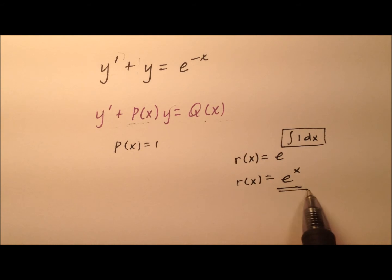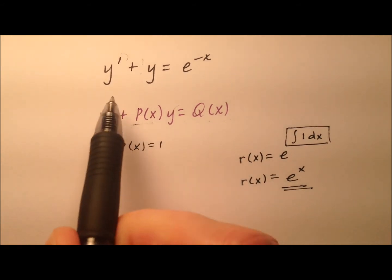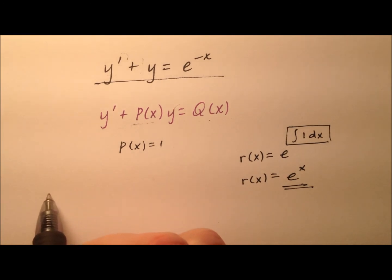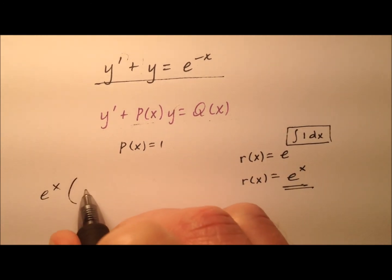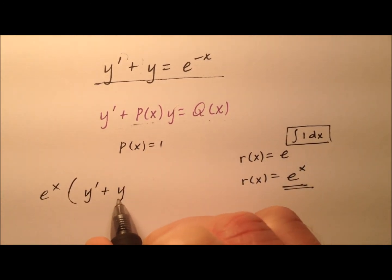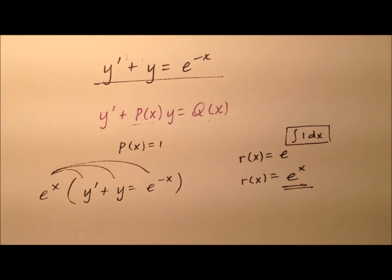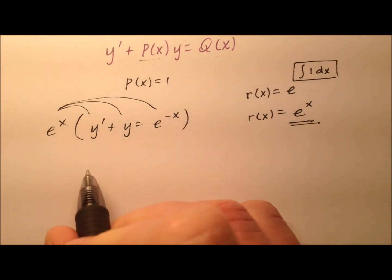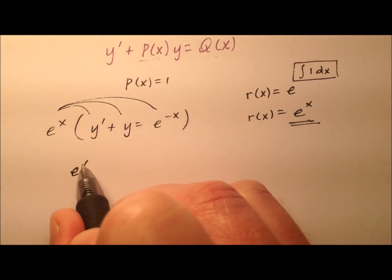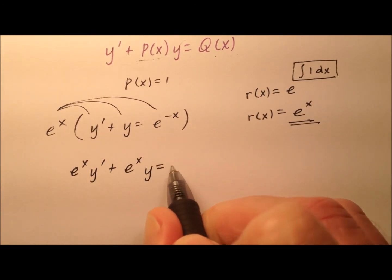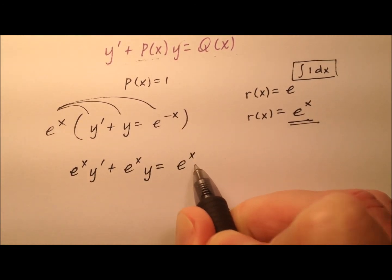Alright, well what are we going to do with this integrating factor e^x? Well we're going to multiply through this entire differential equation by e^x. So y' + y = e^(-x), and I'm just going to go ahead and distribute that e^x through all those terms. So it looks like I'll have e^x y' + e^x y, and I'll go ahead and write this out, e^x times e^(-x).